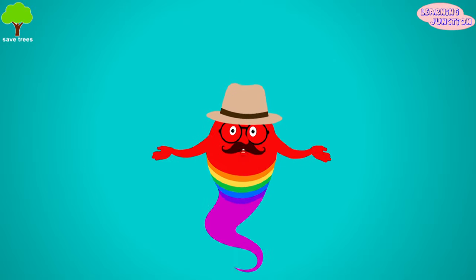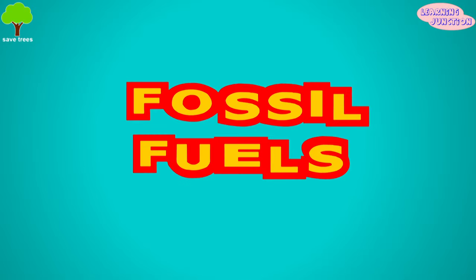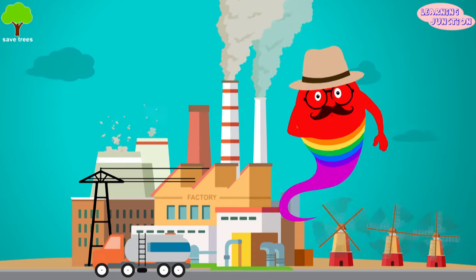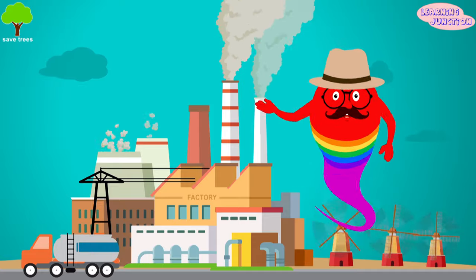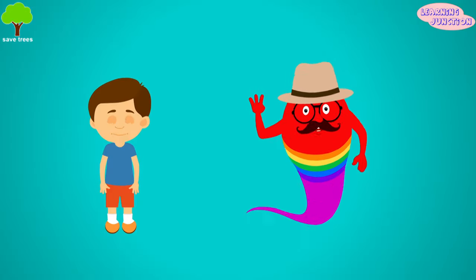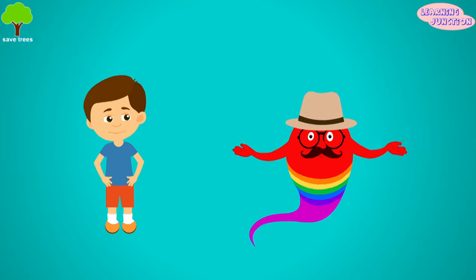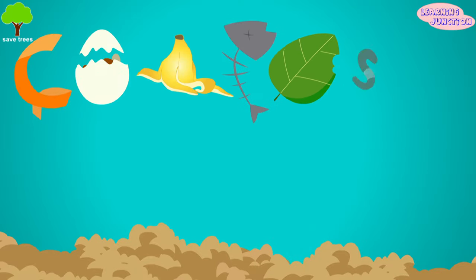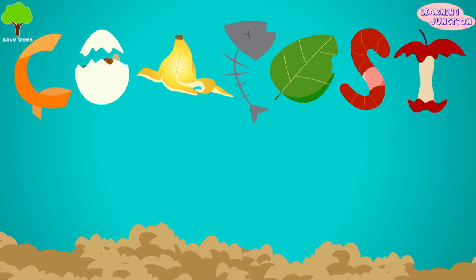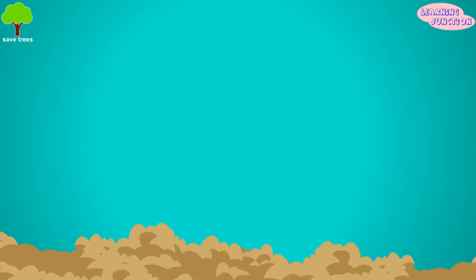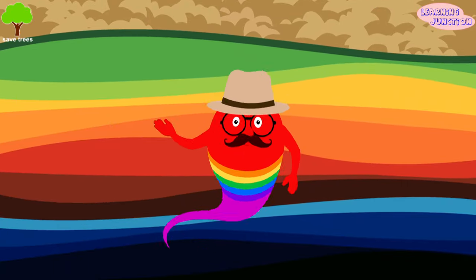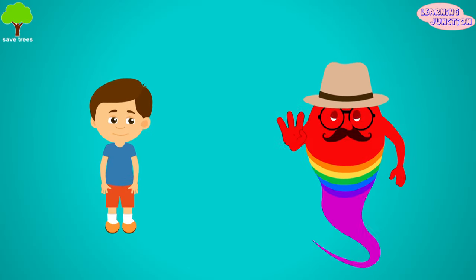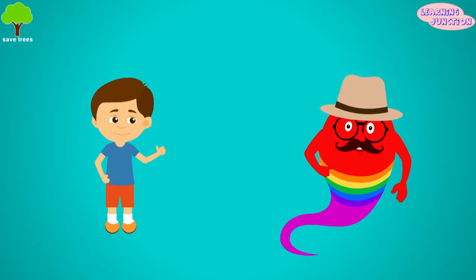Hello friends, today we'll learn about fossil fuels. Fossil fuels are formed from the remains of ancient animals and plants buried deep inside the earth for several years. The three main types of fossil fuels are coal, oil and natural gas. These are the result of the decomposition of dead animal and plant matter buried deep in the earth's crust. These fuels are then pumped from underground and used in a number of ways. Let's learn about three types of fossil fuels one by one.